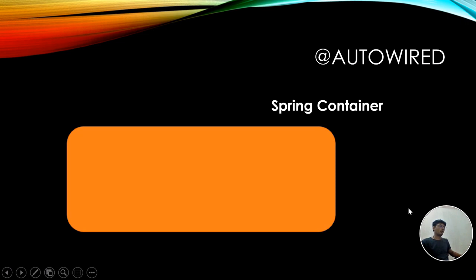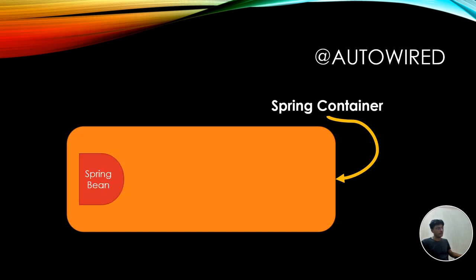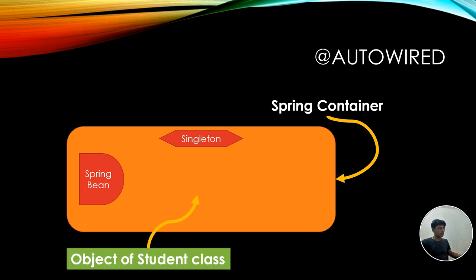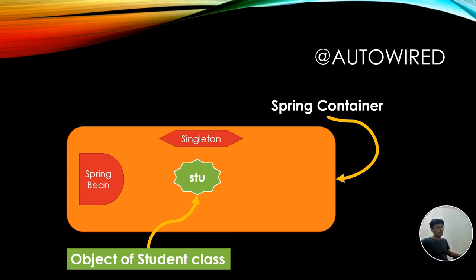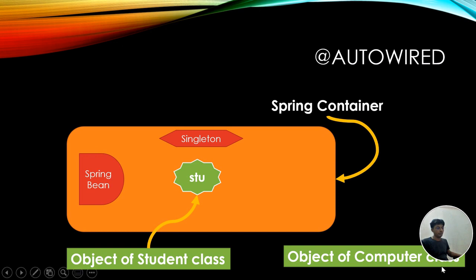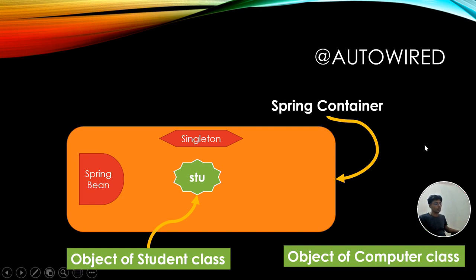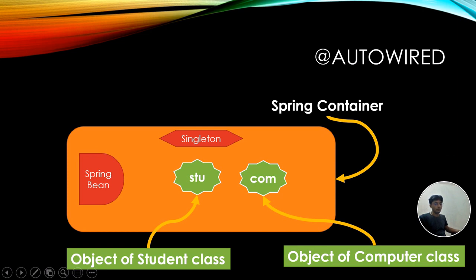So that covers singleton and prototype. Next is the @Autowired annotation. Consider the Spring container has a singleton Student object 'stu'. Now let's think of a scenario where each and every student has a computer. We'll represent that with a Computer object 'com' to understand @Autowired.